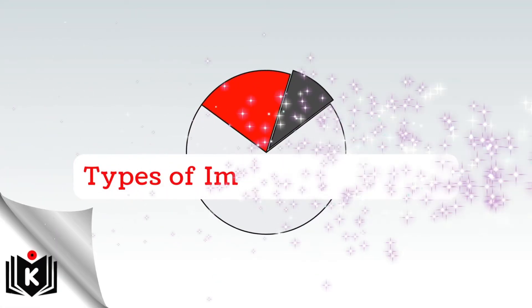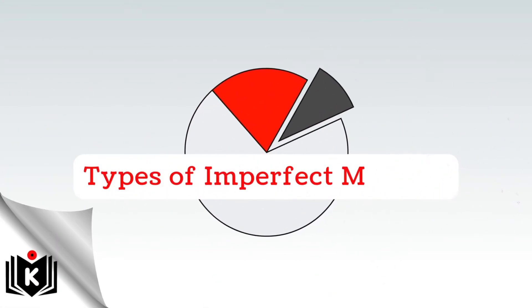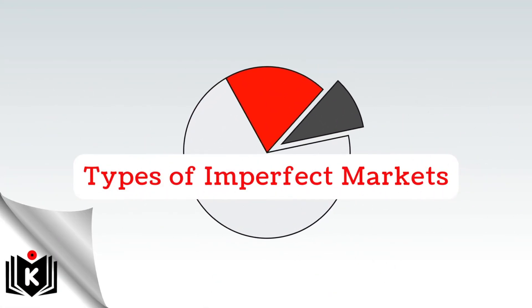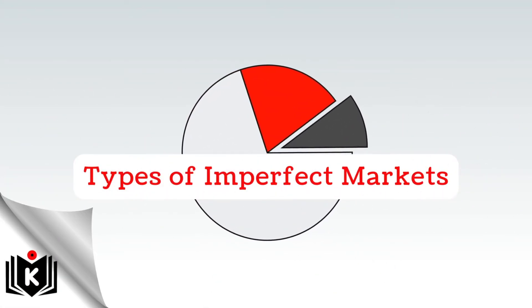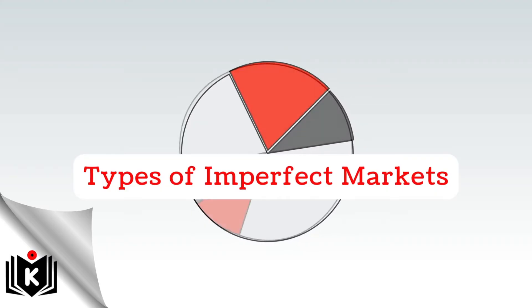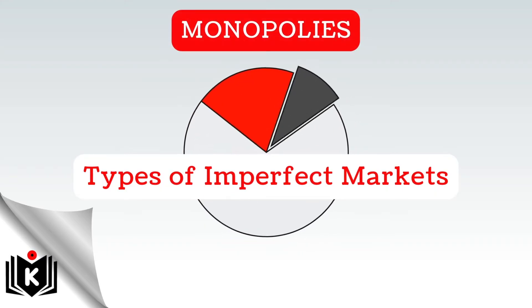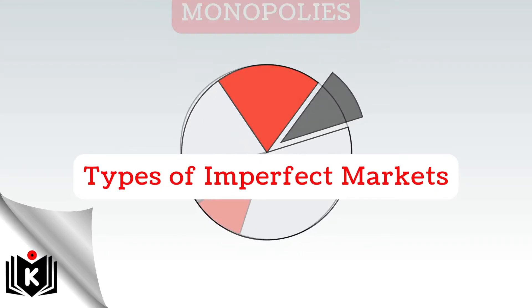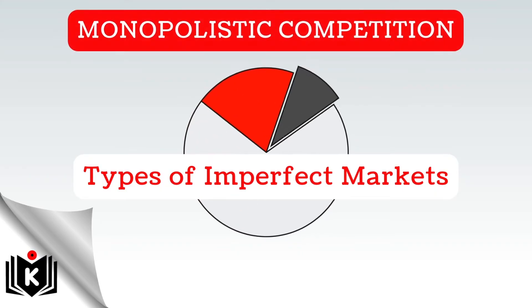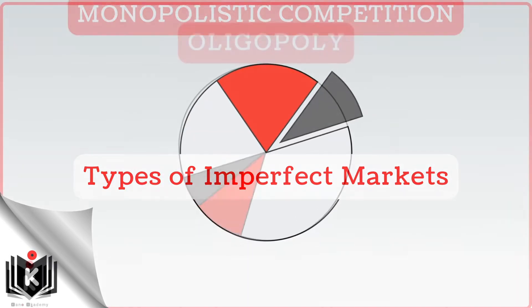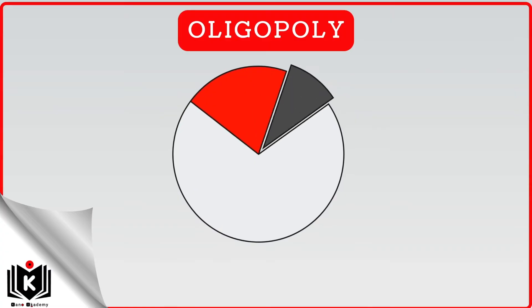There are a number of different types of imperfect markets in an economy. For example, monopolies, monopolistic competition, as well as oligopolies.